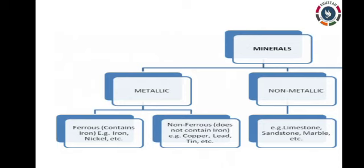Metallic minerals are further classified as ferrous and non-ferrous. Ferrous minerals include iron ore, manganese, and chromite — all of which are ores of iron, as indicated by the letters FE, which stands for iron in the periodic table. Non-ferrous minerals include gold, copper, and silver, and do not contain any iron component.